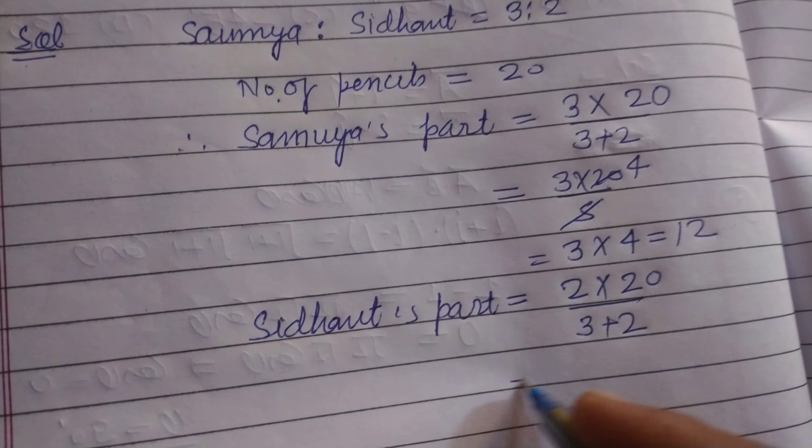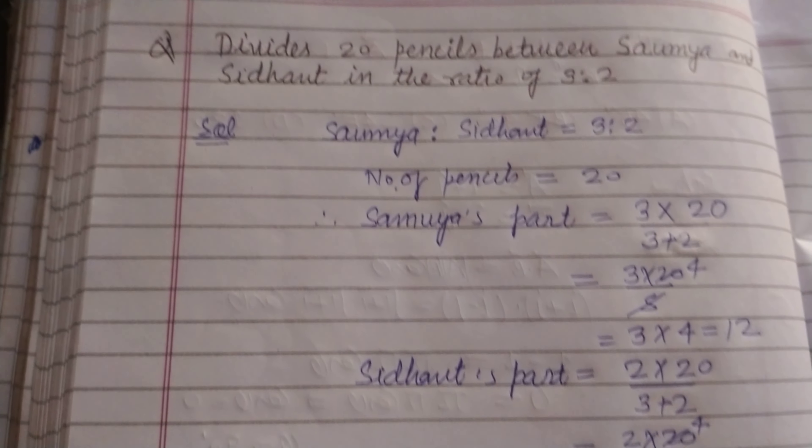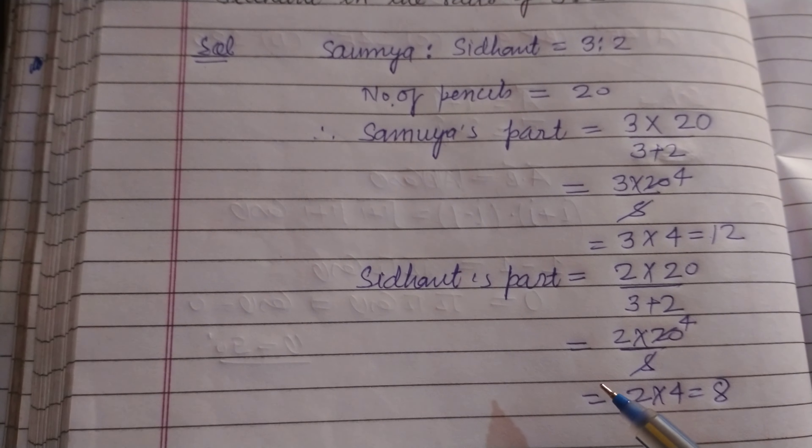Sidhant got 8 pencils while Saumya got 12 pencils when we divide the pencils in ratio 3:2. I hope you got it. Please like the video and subscribe to the channel. Thanks for that.